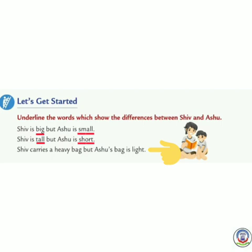Next sentence: Shiv carries a heavy bag but Ashu's bag is light. Here the comparison is between both the bags of Shiv and Ashu, so we have to underline heavy and light. Heavy means bhaari, light means halka.